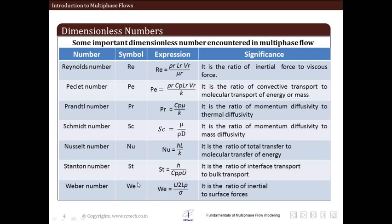Next is the Weber number, given by the symbol We. It is the ratio of inertial to surface forces. Do remember these dimensionless numbers — at least their significance if not their mathematical ratios. From their significance you can derive their ratios by remembering what each term means. It is not necessary to memorize them, but it is very important to remember the significance so you can use these numbers in your analysis. Details are given in any heat transfer or mass transfer book, such as Incropera's Fundamentals of Heat and Mass Transfer.